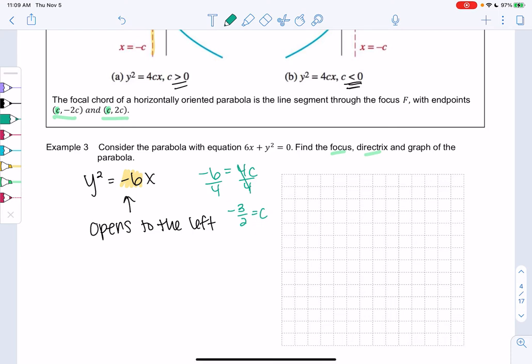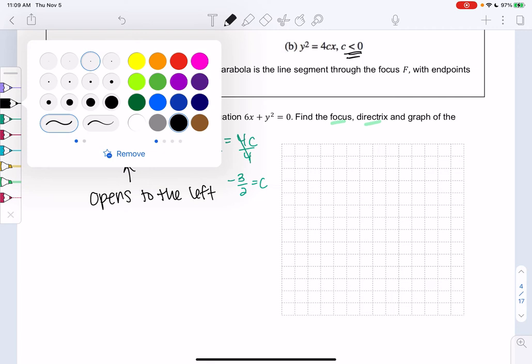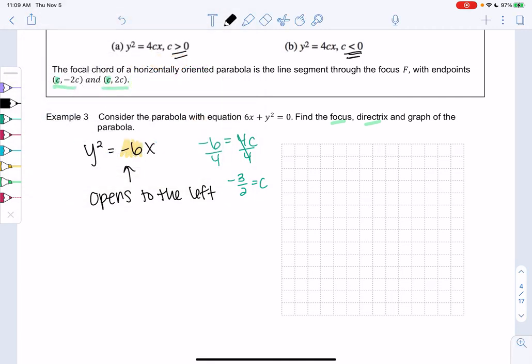So this immediately tells me the focus and the directrix. Since it's horizontal, this is an x value, so the focus will be (-3/2, 0). It's on the x-axis, not the y-axis, and my directrix is just the opposite. It's an x value, but it'll be positive 3/2.